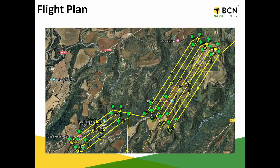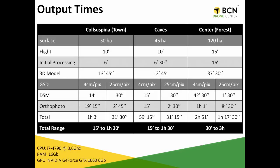Once we have the images, we can process them. Here you will see a table showing the processing times for the different exercises we have seen today. We have three areas: Cossus Pinatown, the caves, and the center. The approximate surfaces covered are 50 hectares, 45, and 120. You can see the flight time to cover them, the initial processing results, the time to generate the 3D model, and the time to generate the maps depending on the resolution.